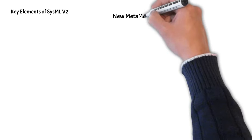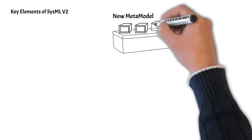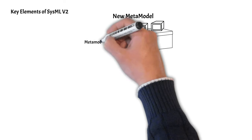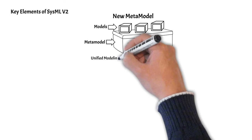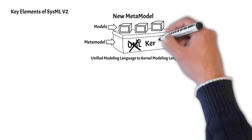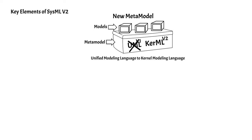The first key element of SysMLv2 is the new metamodel which uses Kernel Modeling Language (KerML). This new metamodel preserves most of the UML modeling capabilities. KerML has a focus on systems modeling and is grounded in formal semantics.